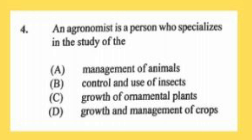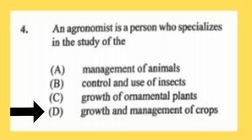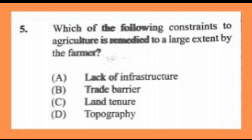Question number four: an agronomist is a person who specializes in the study of the A) management of animals, B) control and use of insects, C) growth of ornamental plants, D) growth and management of crops. The answer is D, growth and management of crops. Once it is speaking about the growth of crops in general, then it's agronomy.